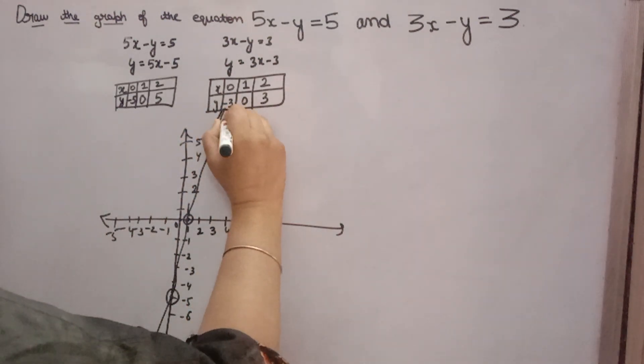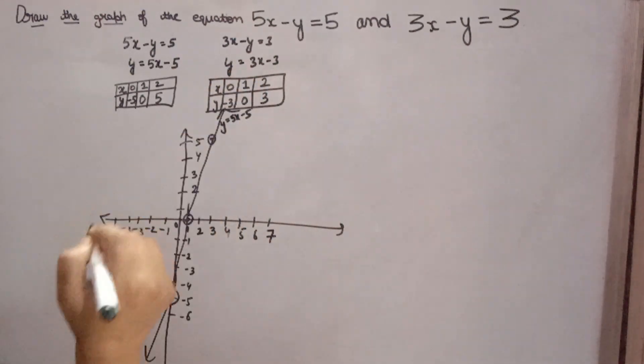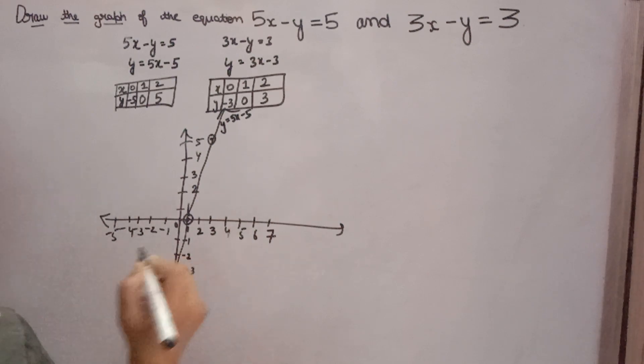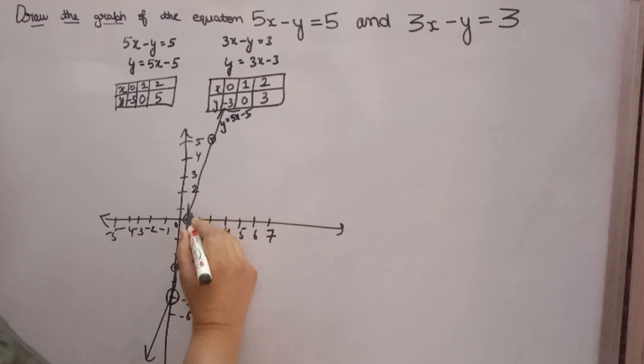Now this is equation y is equal to 5x minus 5. Now you have to make another equation, y is equal to 3x minus 3. x is 0, y is minus 3, so one point will come approximately here. Second is x is 1, y is 0, so second point will come here.